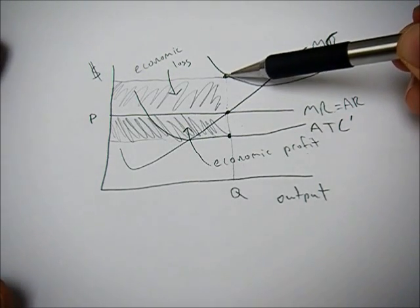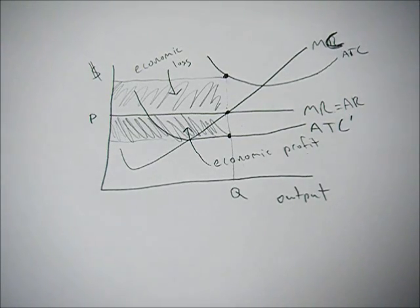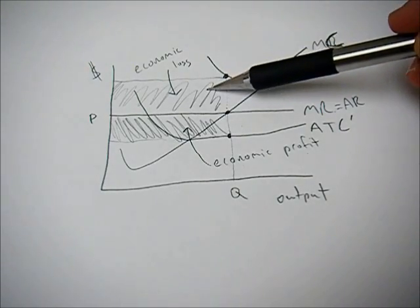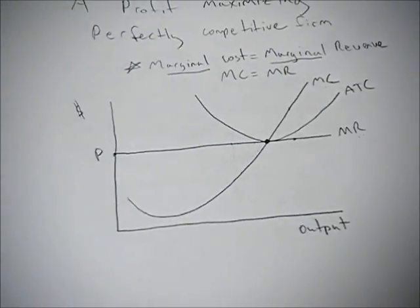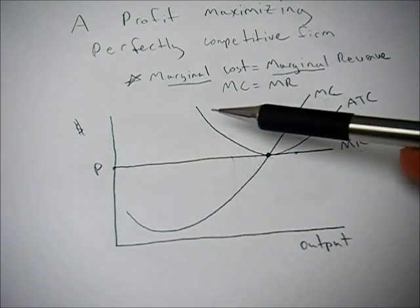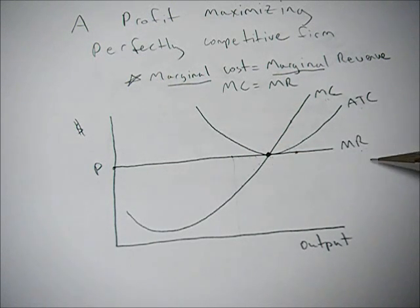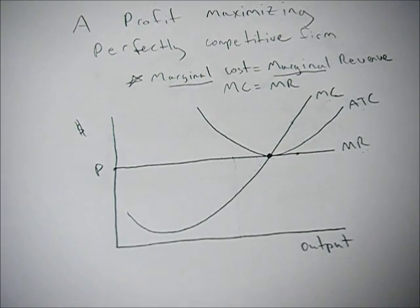And then also, potentially, cost could be really high and that would result in an economic loss. In the long run, firms will either exit the market or enter the market and get us back to this point where the minimum of average total cost equals marginal cost and marginal revenue. And that's our long run equilibrium.